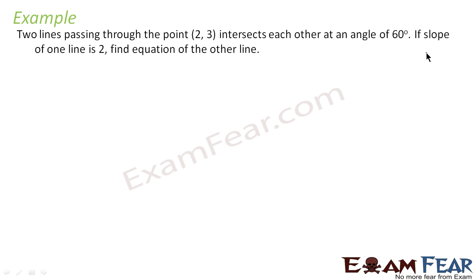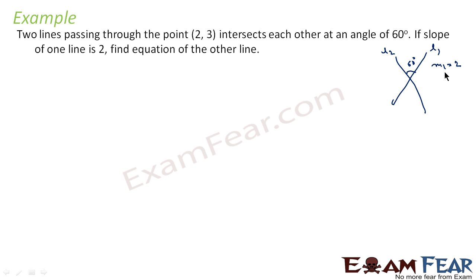Let's draw this problem. This is line 1, this is line 2 — there are two lines. The angle between the lines is 60 degrees. This is line l1, this is line l2. The point is (2, 3), this is point P. What we have to do? We have to find the equation of line l2.